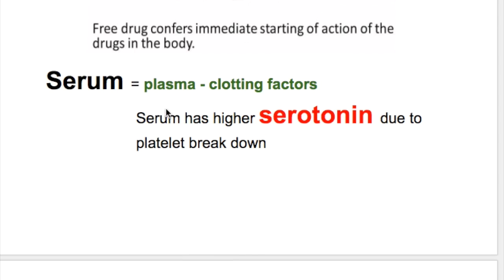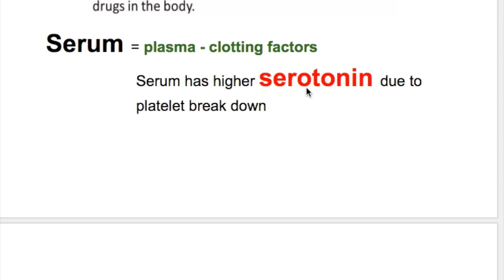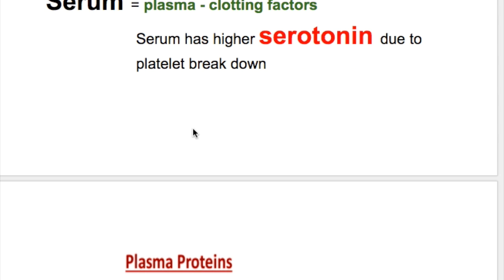What is serum? Serum is plasma minus clotting factors. If clotting factors are removed from the plasma, it becomes serum. Serum does not clot. What substance is increased in serum? Serotonin is increased in serum due to platelet breakdown.